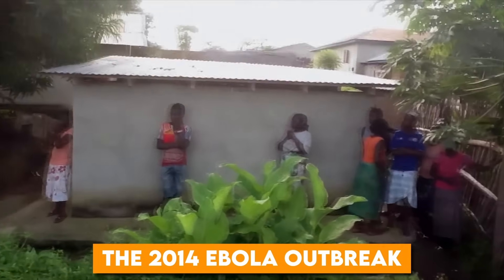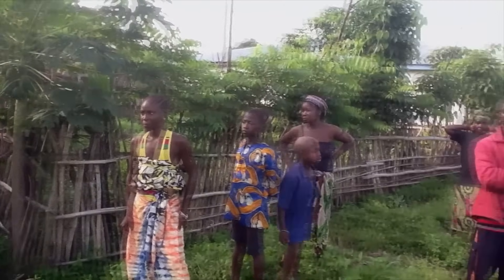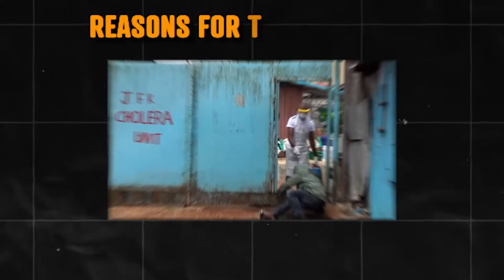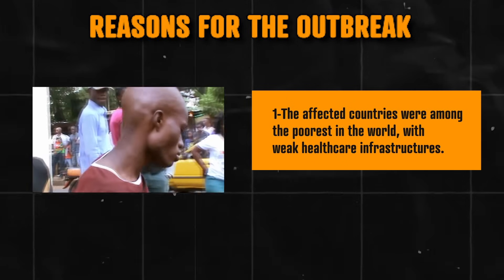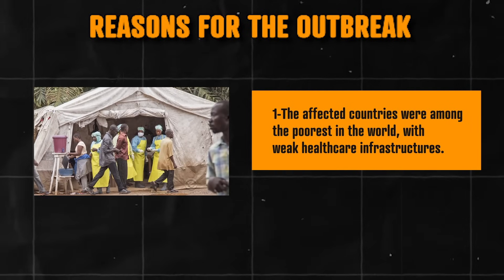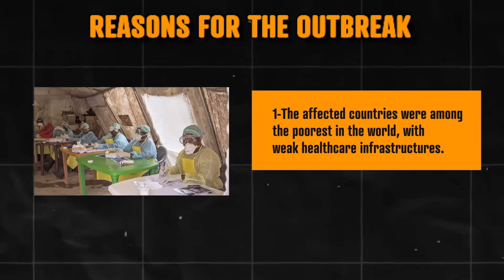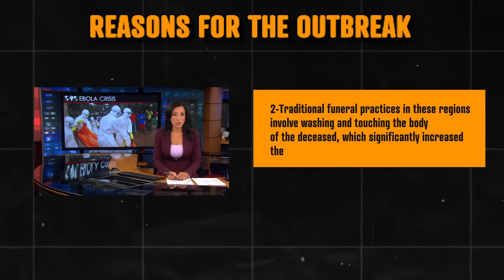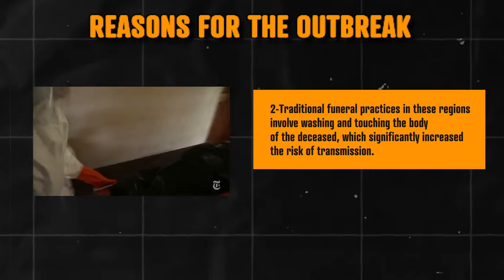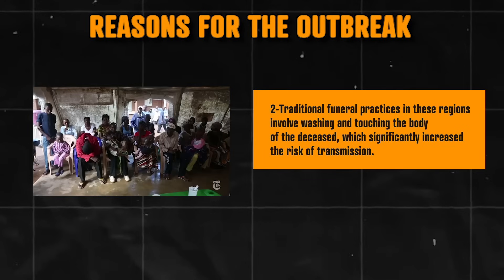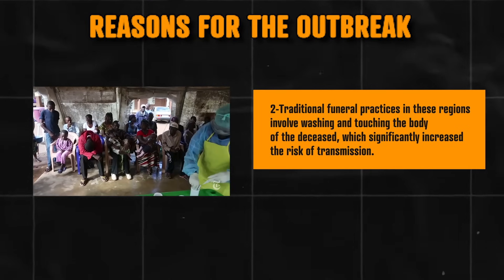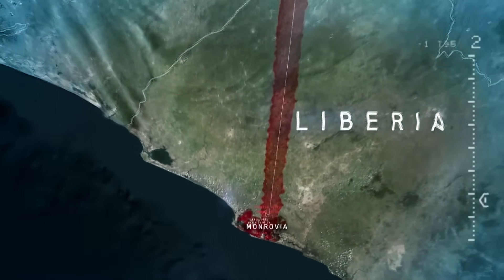The 2014 Ebola outbreak was unprecedented in its scale and impact. Several factors contributed to the severity. Firstly, the affected countries were among the poorest in the world with weak healthcare infrastructures — hospitals were ill-equipped, understaffed, and lacked basic supplies such as gloves and disinfectants, and initial cases were misdiagnosed, leading to delayed responses. Secondly, traditional funeral practices in these regions involved washing and touching of the deceased, which significantly increased the risk of transmission. Additionally, the outbreak occurred in densely populated areas, facilitating rapid spread. There were more cases and deaths in this outbreak than all the others combined.